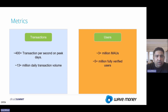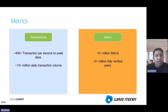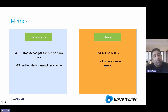Talking about metrics: the Wave ecosystem processes 400 plus transactions every second, and on peak days it goes beyond 400. The volume of transactions is over 13 million in a day. Monthly active users are over 3 million. We have fully registered KYC level 2 users over 5 million, and total registered users over 20 million.